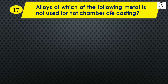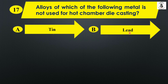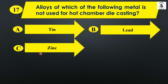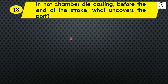Question seventeen: Alloys of which of the following metals are not used for hot chamber die casting? Option A: Tin, Option B: Lead, Option C: Zinc, Option D: Iron. Among the options, alloys of iron are least manufactured using the hot chamber die casting method, while the others have wide applications. Since the question asks which metal is not used, the answer is Option D: Iron.